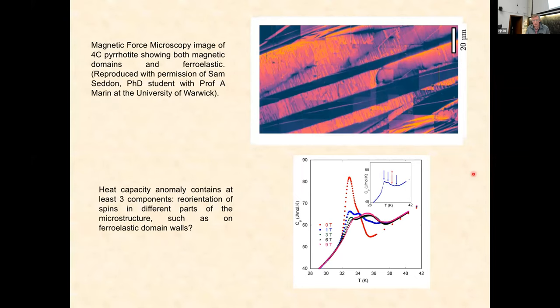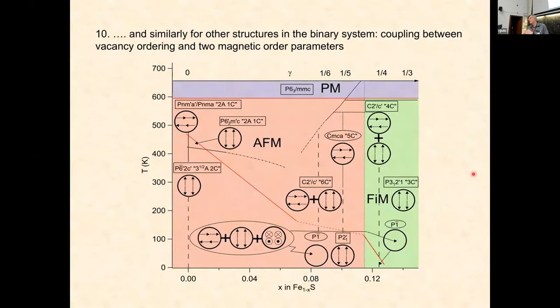We can now go back to the phase diagram and rationalize all these phases in terms of the two behaviors: the magnetic ordering and the vacancy ordering, different schemes. The only thing I really want to draw your attention to here, which seems to me to be one of the really interesting features of pyrrhotite, is the fact that the Néel temperature is the same, 590K, all across the solid solution.